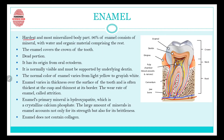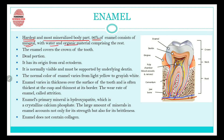Enamel is the hardest part of our body and it is the most mineralized body part. 96% of enamel is made up of minerals, while 4% is water and organic material. If you look at this picture, all the white portion is the enamel — the portion we can see through our eyes. The enamel covers the crown of the tooth.